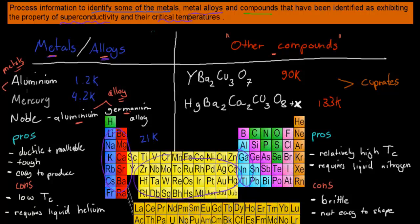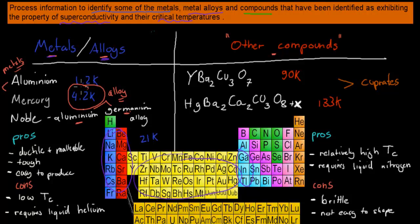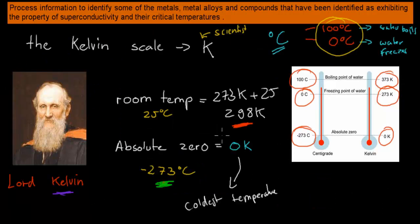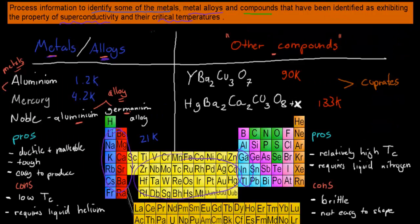You need to remember some of these names — aluminium and mercury are quite easy to remember. You also need to know their critical temperatures: aluminium has a critical temperature of 1.2 Kelvin, mercury has 4.2 Kelvin, and the niobium-aluminium-germanium alloy has 21 Kelvin. These temperatures are really low — we're talking about roughly minus 270 degrees Celsius — so really really cold.